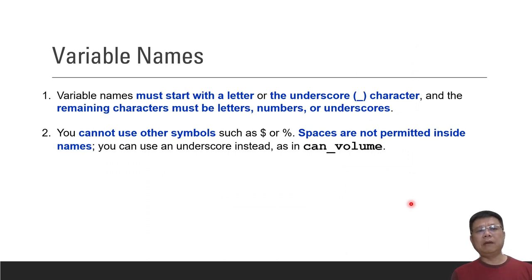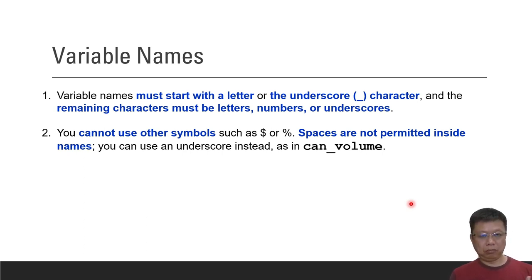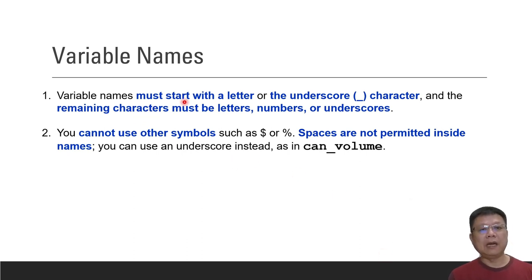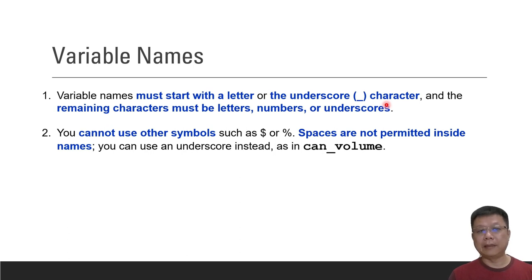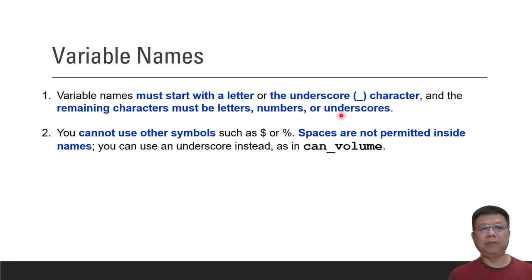In terms of variable names, it's up to you what name you want to use, as long as you can remember it easily. However, there are four rules to follow. The first rule is that the name must start with a letter — any alphabet, capital or small — or an underscore character. The remaining characters must be letters, numbers, or underscores. Do not put question marks or plus signs.